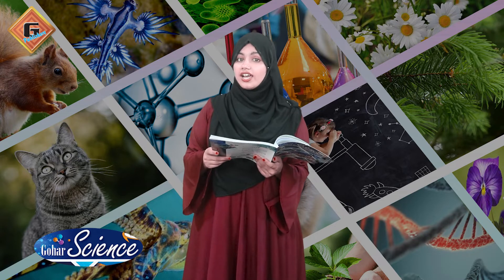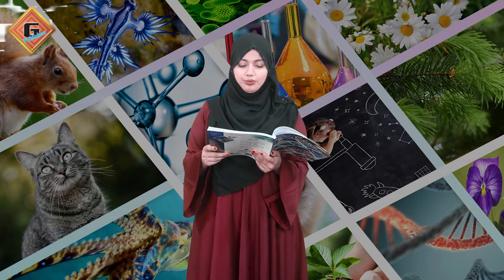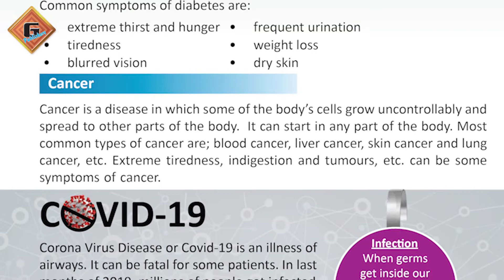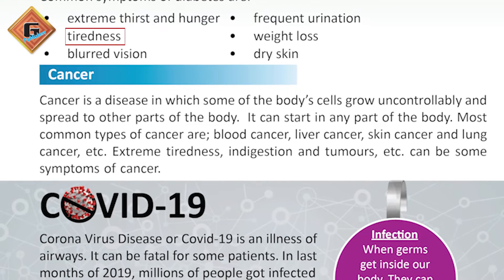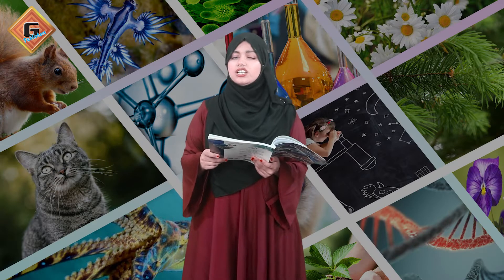I will tell you what the symptoms of Diabetes are: tiredness, blurred vision — my father's eyesight is also very bad because he has Diabetes — and weight loss. My father is very lean since he has had Diabetes.